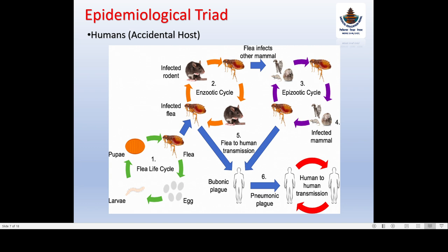Now, how is plague transmitted from rat flea to humans? The flea completes its normal life cycle from egg to larva to pupa. When this flea is infected by the bacterium Yersinia pestis — through the natural environment or through another infected rodent — it becomes an infected flea. The infected flea then bites a rodent such as a rat, and this cycle continues. This is known as the enzootic cycle, where the flea bites the rodent and the cycle continues within the rat and flea population.